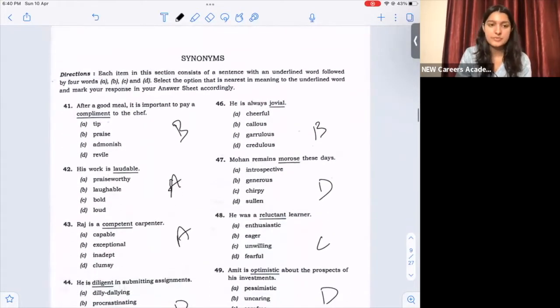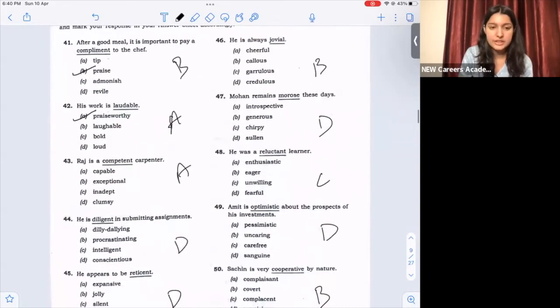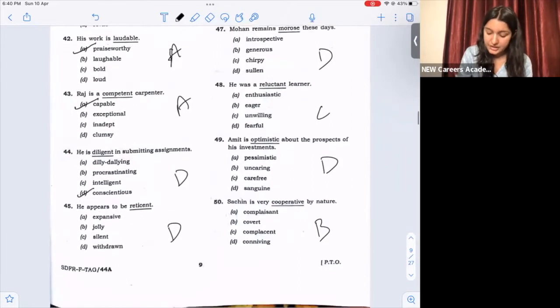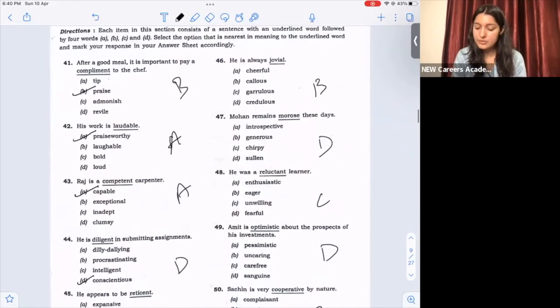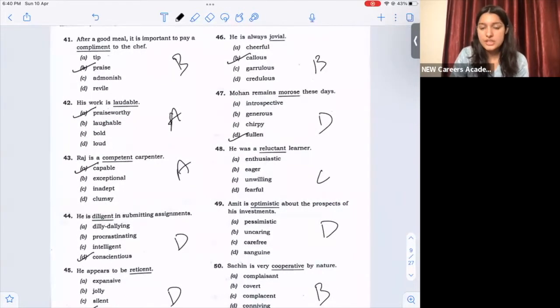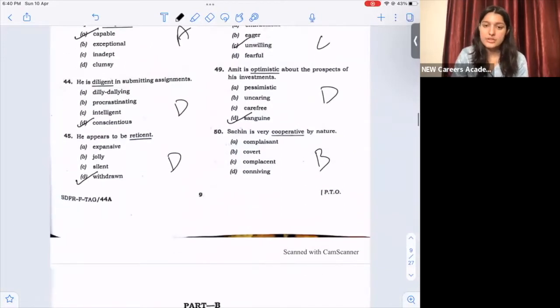Next, synonyms. Question number 41, option B, praise. 42, A, praiseworthy. Question number 43, A, capable. 44, option D. 45, option D. 46, option B. 47, option D. 48, option C, unwilling. 48, option D. Question number 50, option B.